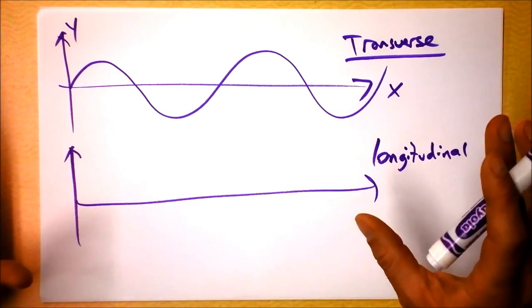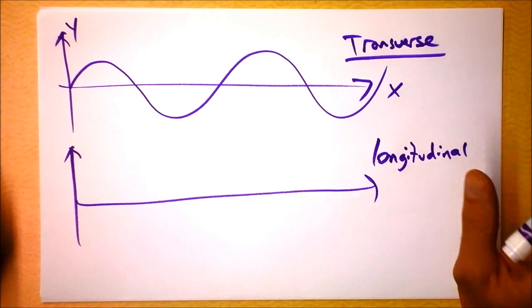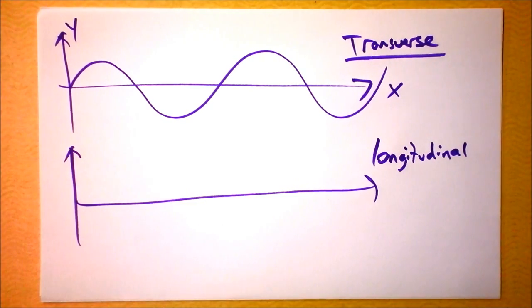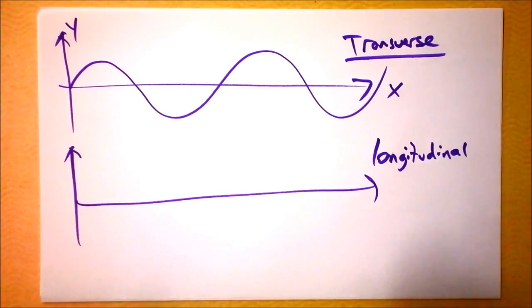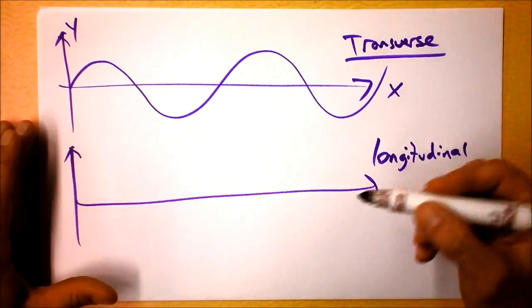A longitudinal wave, for instance, would be a sound wave. A longitudinal wave is where stuff gets bunched up and then stuff gets spread back out again. And it gets bunched up and then spread back out again.